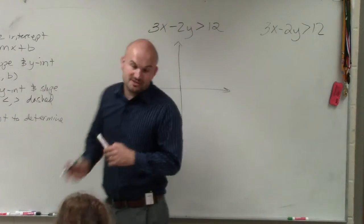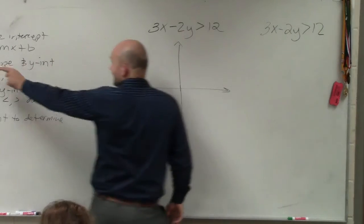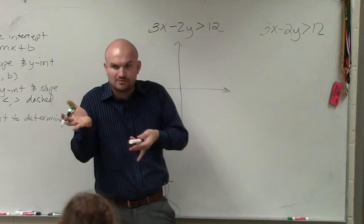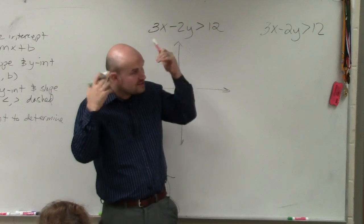So to write it in slope-intercept form, we want to have the y isolated. y equals mx plus b. Well, we have an inequality instead of an equal sign, but the same process goes. Solve for y.